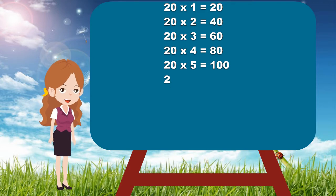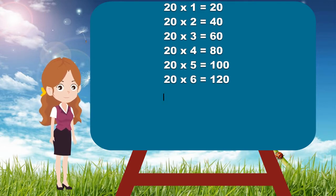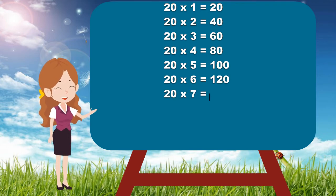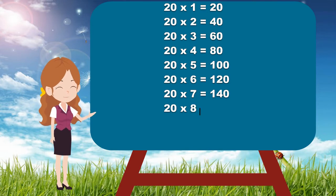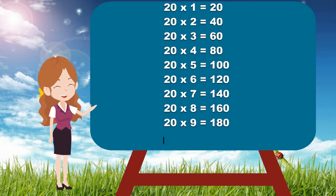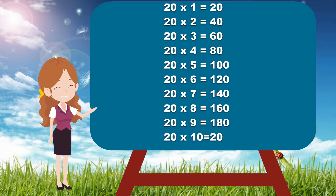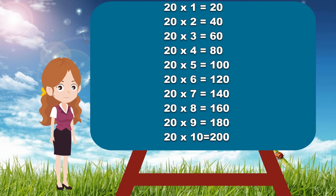20×6 is 120. 20×7 is 140. 20×8 is 160. 20×9 is 180. 20×10 is 200. Now children,